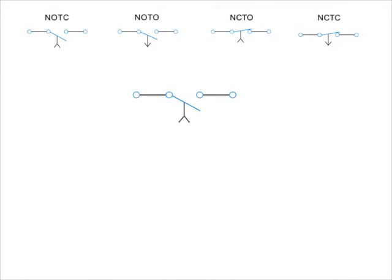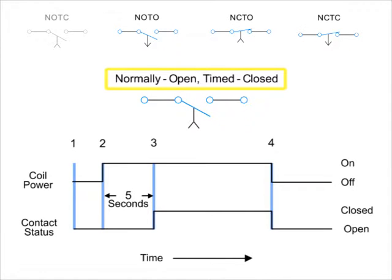First, we have the normally open, timed closed NOTC contact. This type of contact is normally open when the coil is unpowered or de-energized. After the coil has been continuously powered for a specified amount of time, in this example five seconds, the contact is closed. The contacts will immediately open when the coil is de-energized.